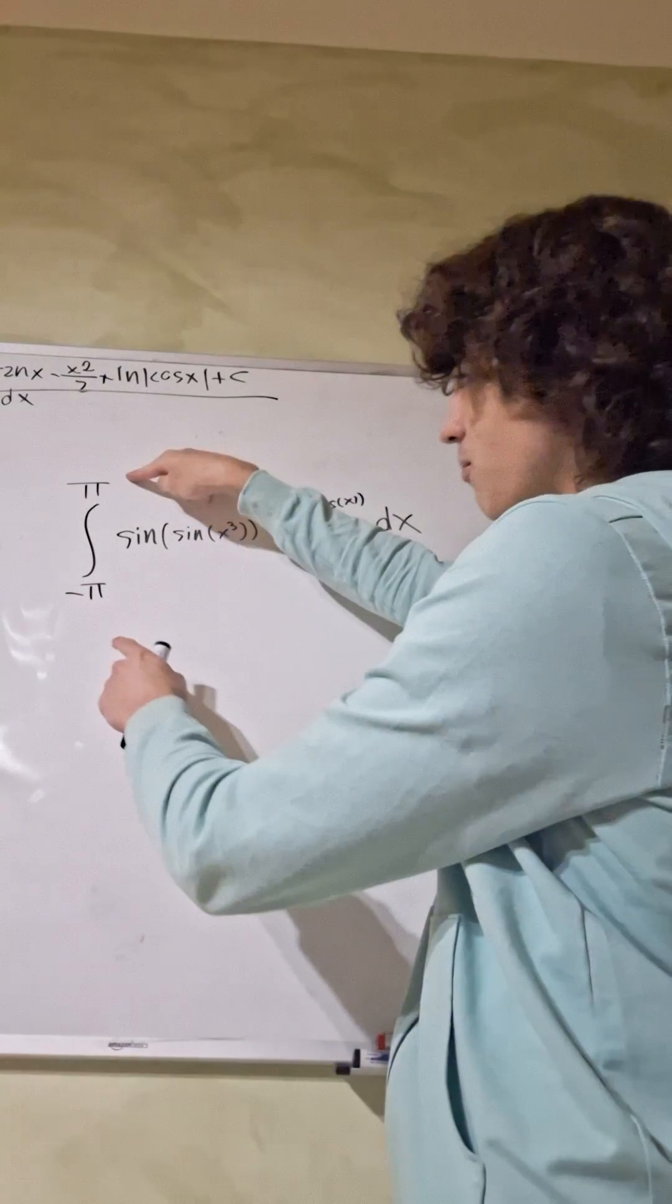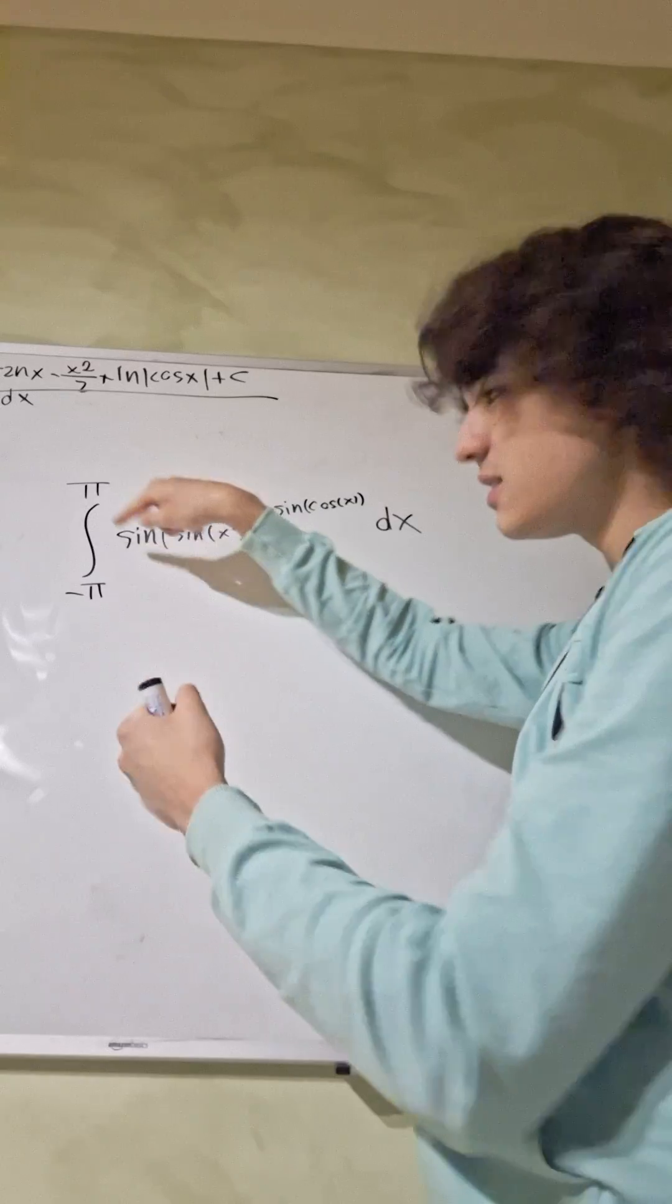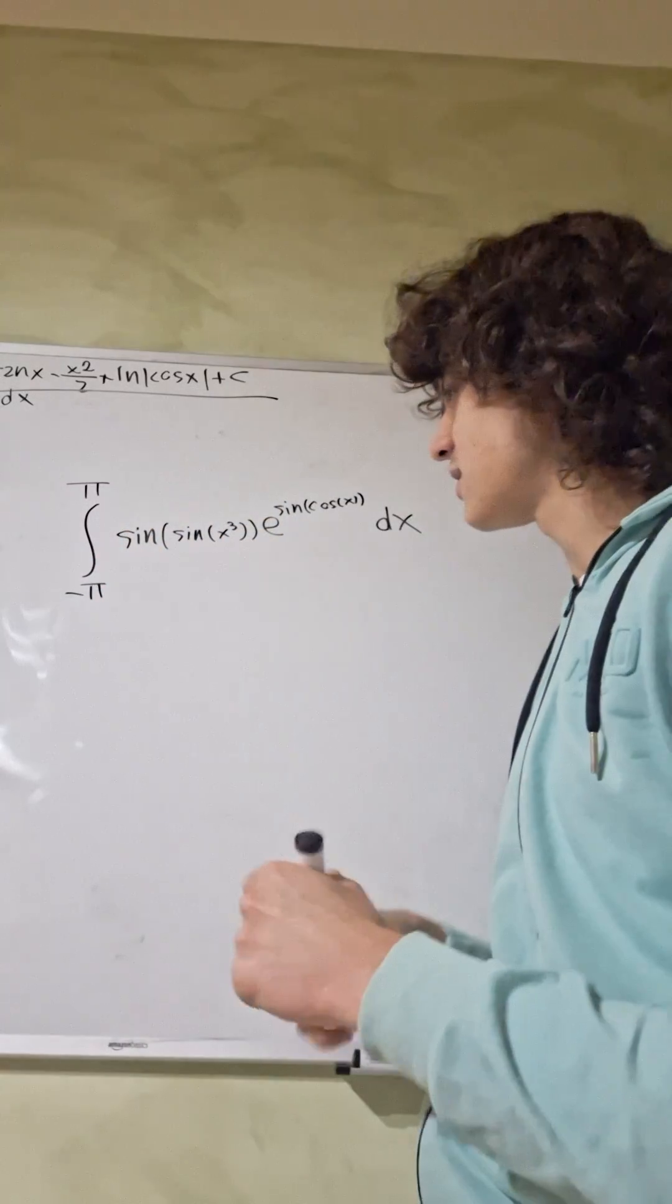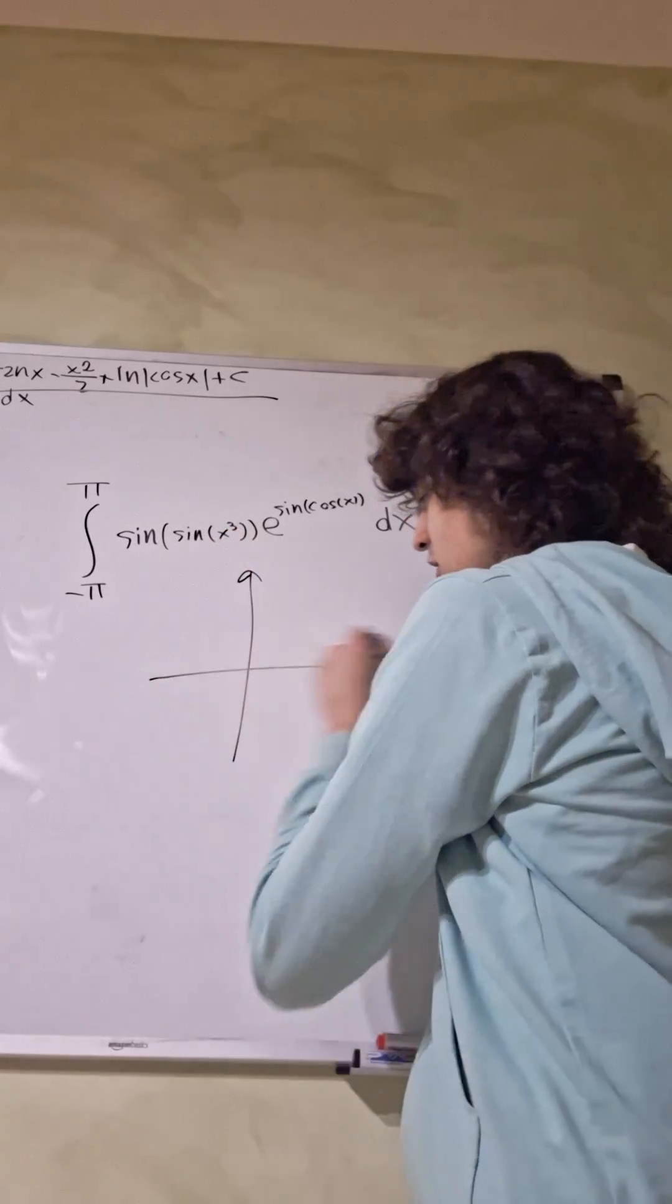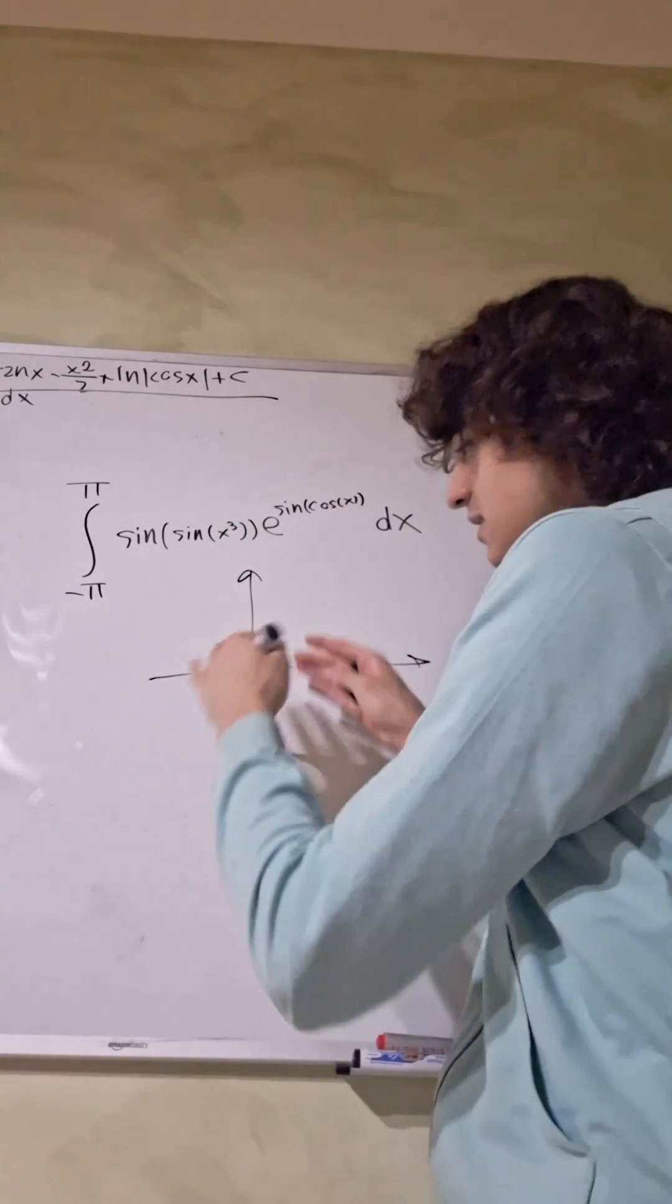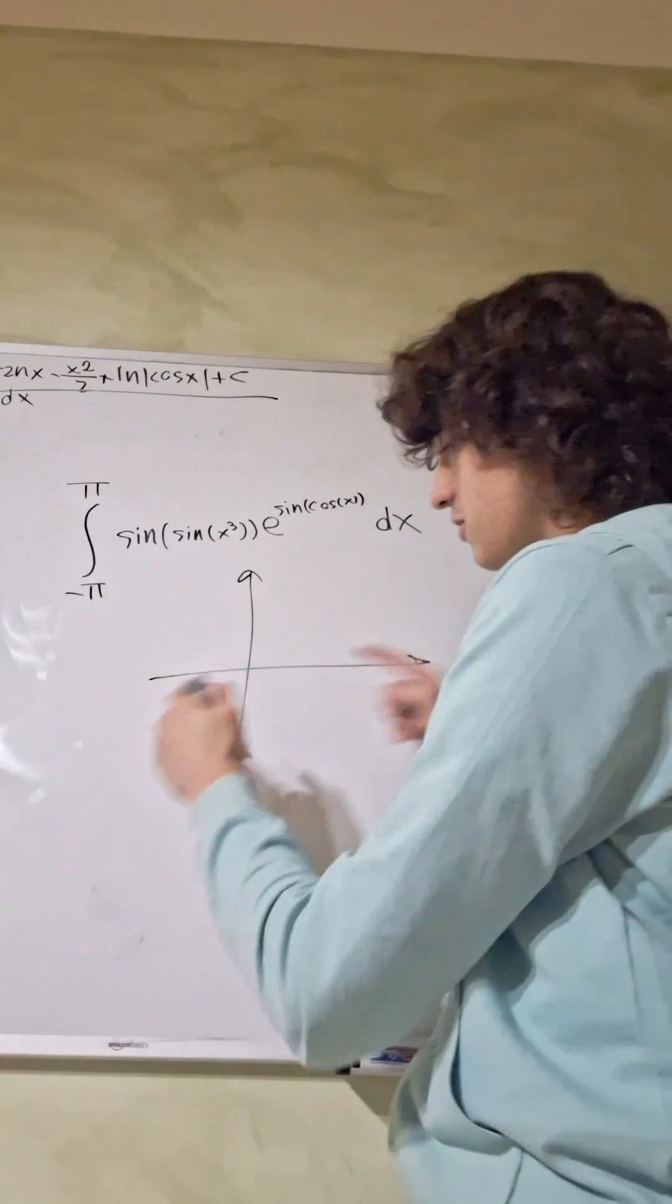So as you can see, first notice that we have pi and its opposite, minus pi, so pi with a minus sign in front of it. So if this function is odd, basically if it has a symmetry with respect to the origin,